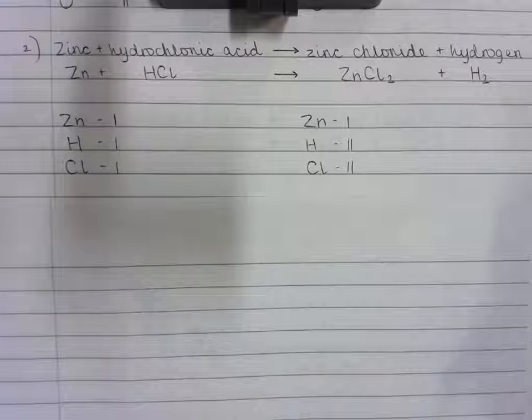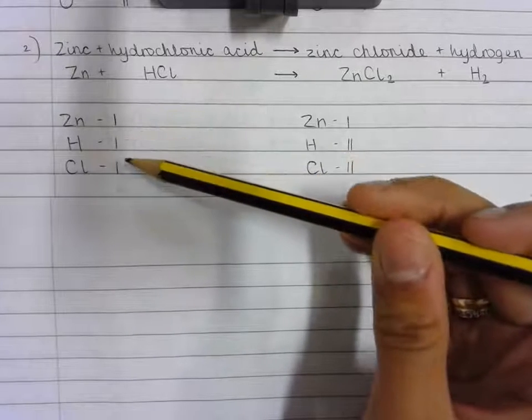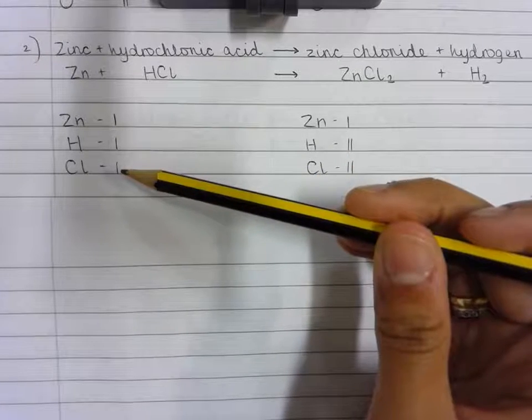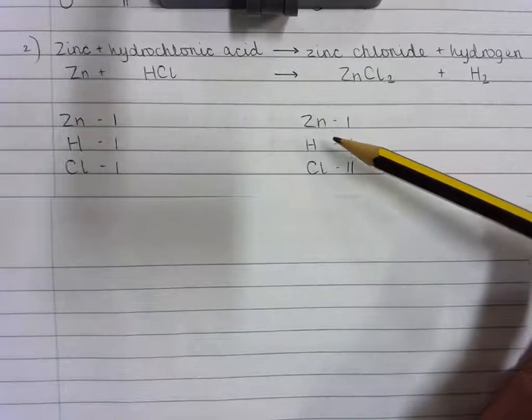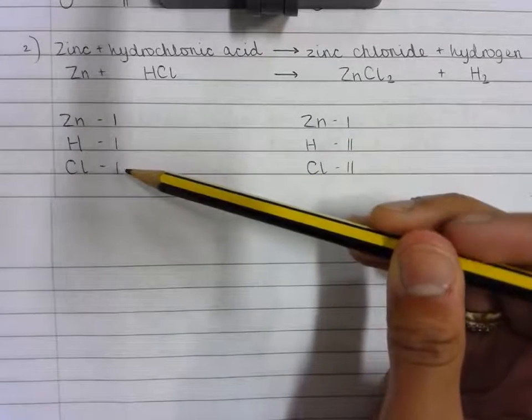So you need to add a number in front of the substances on the reactant side that contain the hydrogen and chlorine atoms. So I need to increase hydrogen and chlorine by one, so I need to have two hydrogen and chlorine atoms on the reactant side.